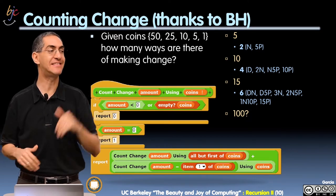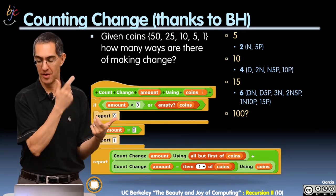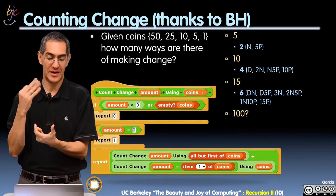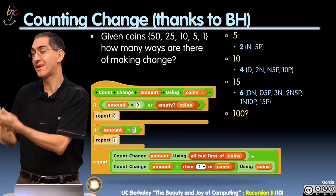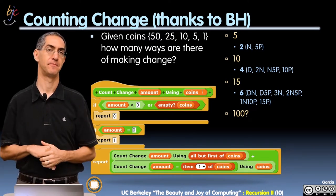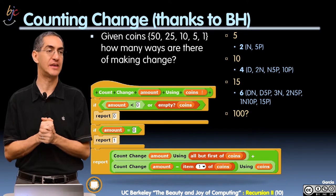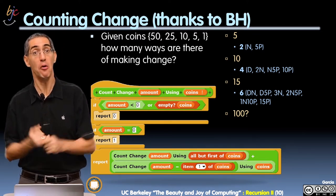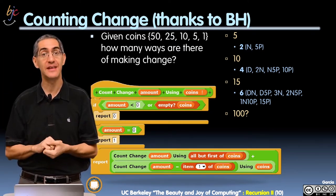How about 15 cents? A dime and a nickel is one way. A dime and five pennies, way number two. Three nickels, way number three. Two nickels and five pennies, way number four. One nickel and ten pennies, way number five. Fifteen pennies — that's six. Now I ask you, how many ways are there of making change for a dollar? How would you even think of this kind of question? This is really hard.